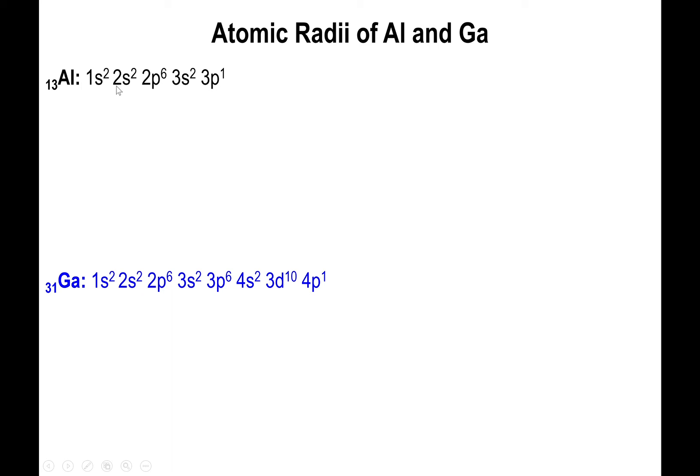We basically start by writing out the electron configurations of aluminum and of gallium. We have 1s2 2s2 2p6 3s2 3p1 for aluminum, and 1s2 2s2 2p6 3s2 3p6 4s2 3d10 4p1 for gallium. And in case you're wondering, yes, you do have to write out the entire configuration because you need to see how many electrons are present in each individual orbital to apply Slater's rules. So using the noble gas notation is not going to help you out here.